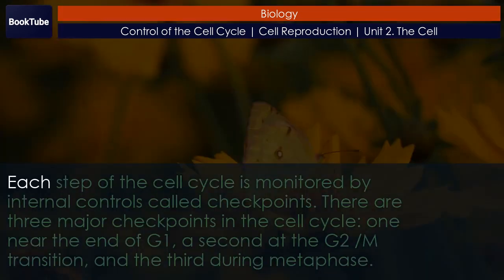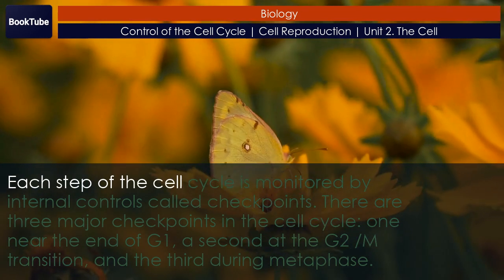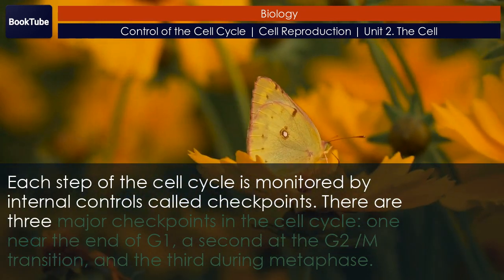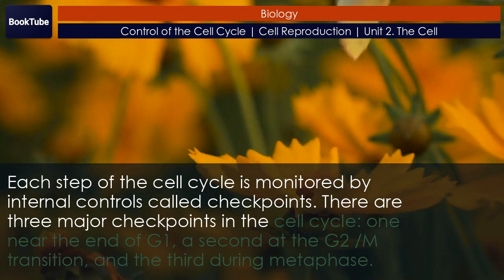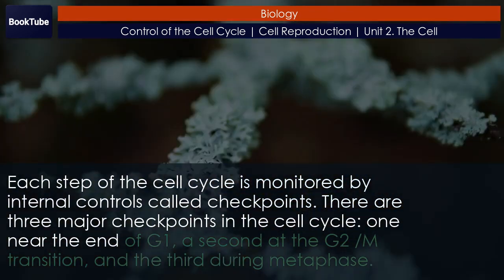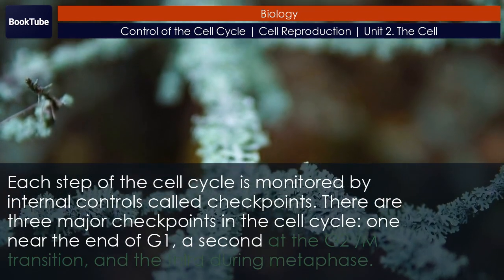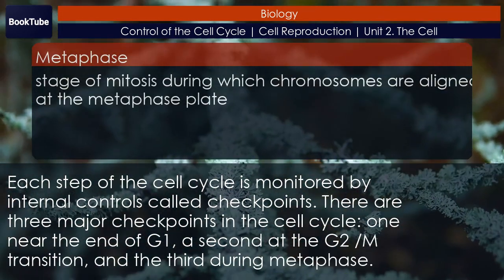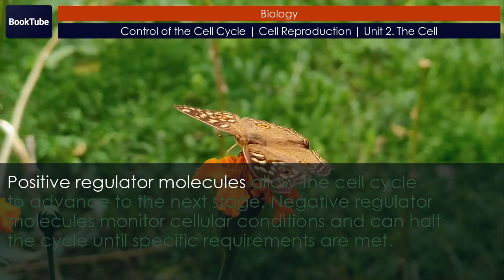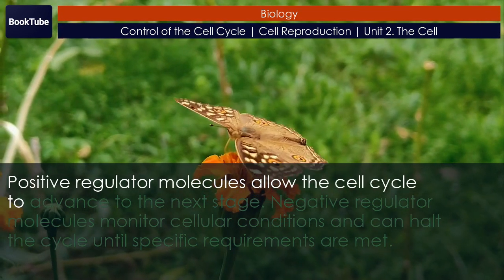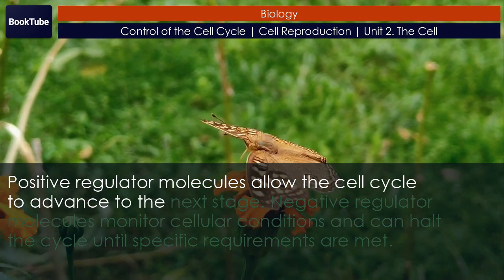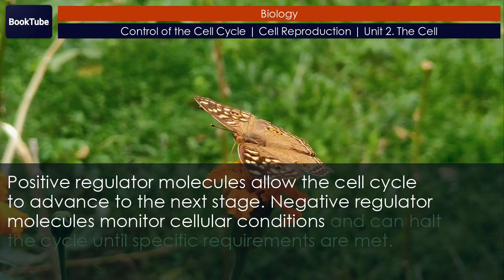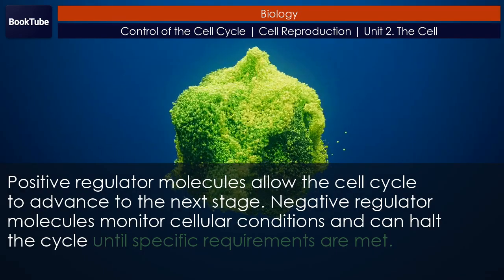For the cell to move past each of the checkpoints, all positive regulators must be turned on and all negative regulators must be turned off. Each step of the cell cycle is monitored by internal controls called checkpoints. There are three major checkpoints: one near the end of G1, a second at the G2/M transition, and the third during metaphase. Positive regulator molecules allow the cell cycle to advance to the next stage; negative regulator molecules monitor cellular conditions and can halt the cycle until specific requirements are met.